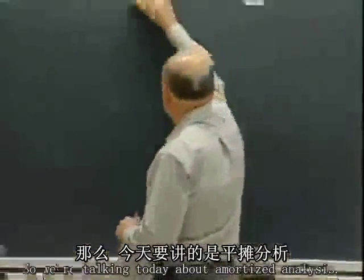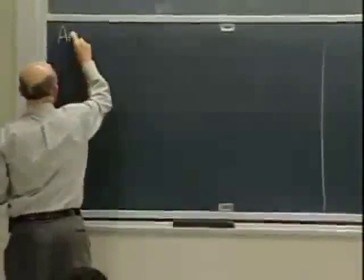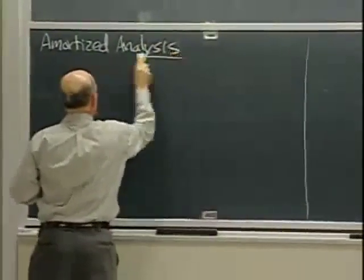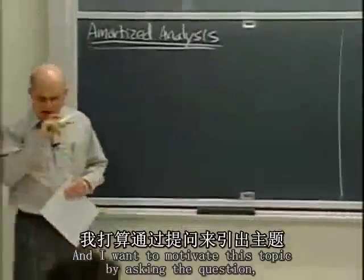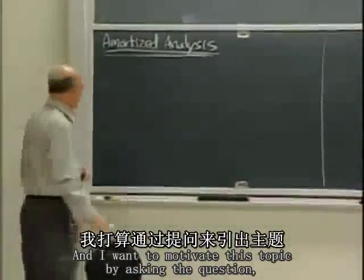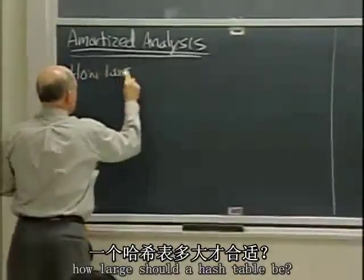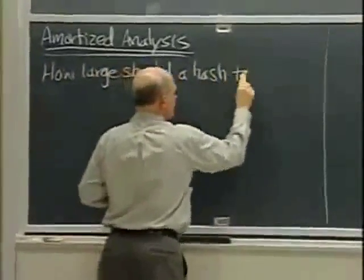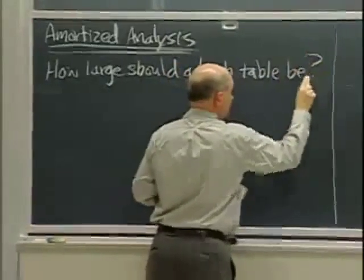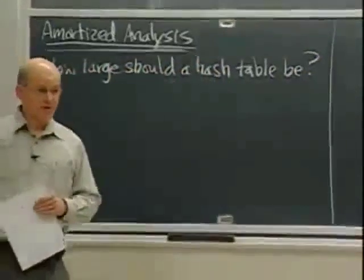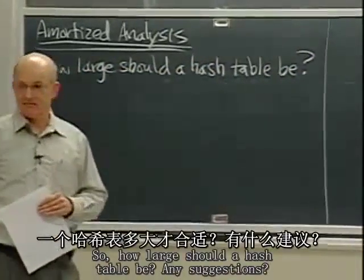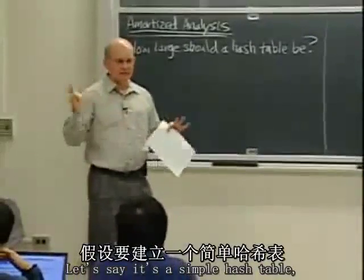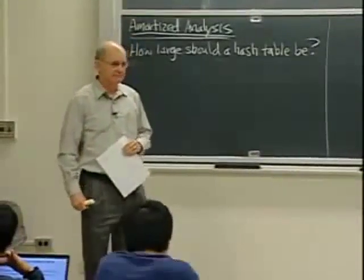So we're talking today about amortized analysis. I want to motivate this topic by asking the question: how large should a hash table be? How big should I make it?